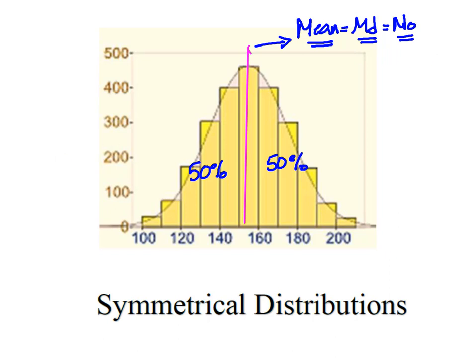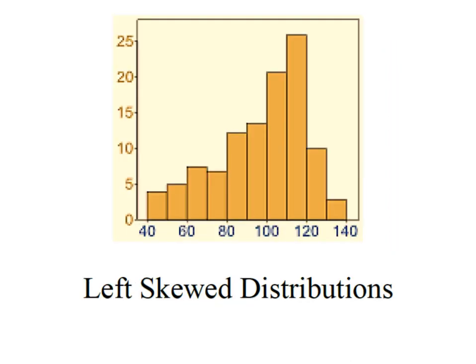But what happens when we have extremely low values that understate the mean or extremely high values that overstate the mean? Well in these cases where we have extremely low values that make the mean much smaller than it probably should be, we end up with what we refer to as a left skewed distribution.